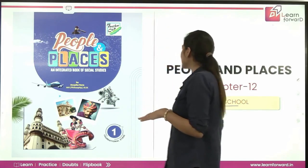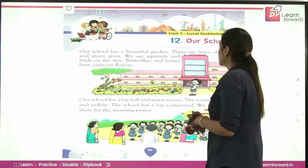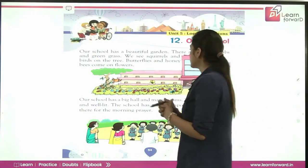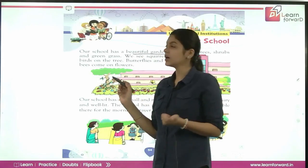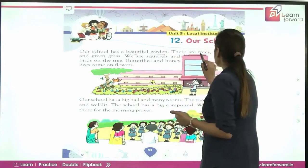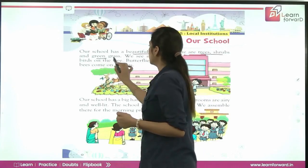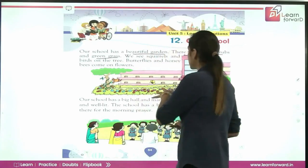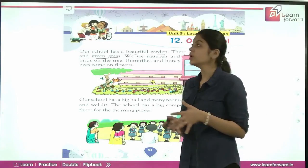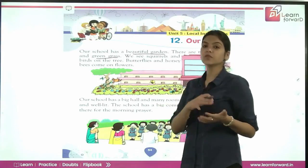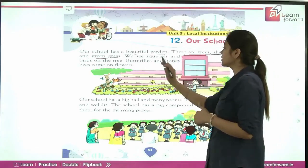Please be ready with your books. Our school has a beautiful garden. Every school has gardens. There are trees, shrubs, and green grass. These are some things which you can find in all school gardens. In every school's garden, you will find a variety of plants and grass.